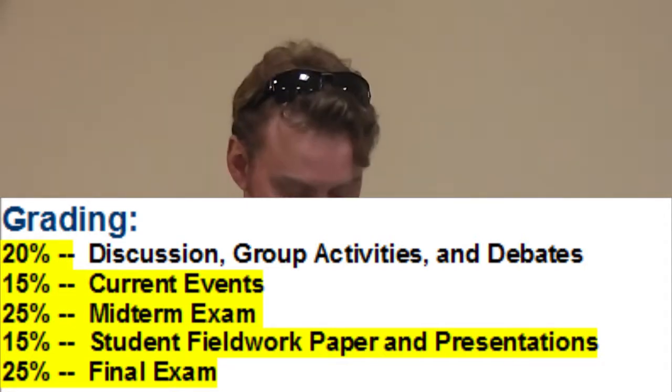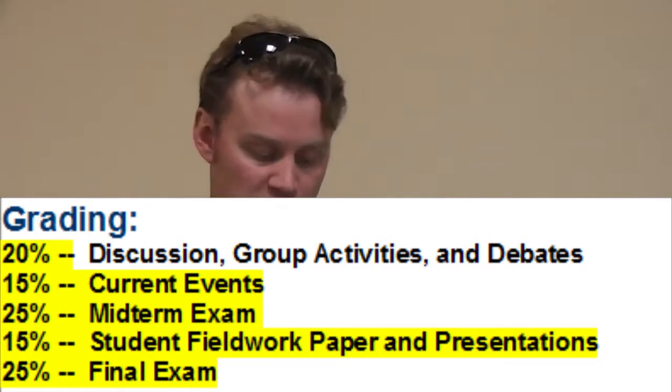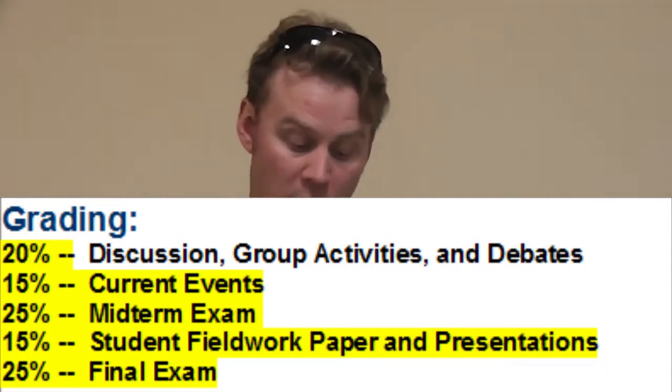The grading for cultural anthropology is as follows: you'll receive 10% for discussion — answering discussion questions. There's also 15% for current events, 25% for a midterm examination, 30% for your student fieldwork paper, and 20% for the final. A portion of our class time will be devoted to formal or informal discussions of selected readings throughout the semester. You'll be asked to answer discussion questions following reading and video assignments. Your grade will be based on the quality and quantity of your participation in these writing assignments.